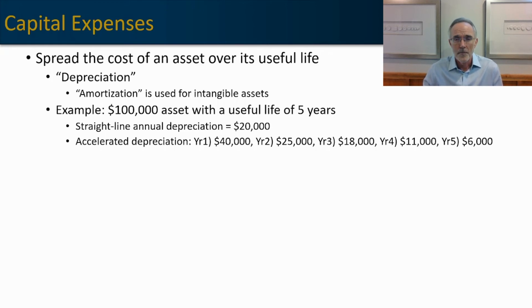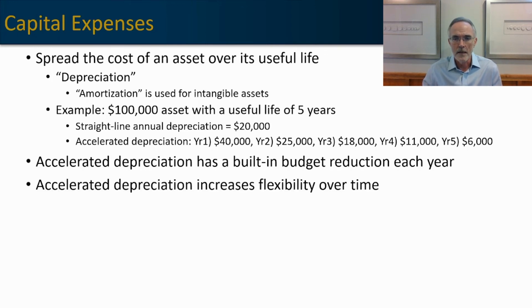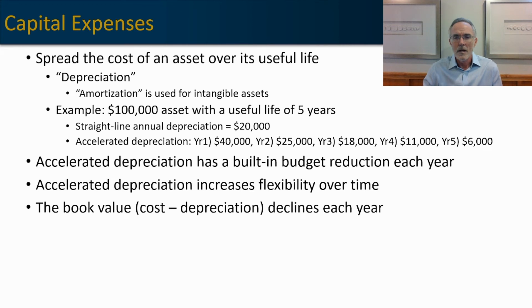Why would you want accelerated depreciation? When you first acquire the asset, you can adjust your budget by $40,000 rather than $20,000 under straight-line. That builds in automatic budget reductions in future years. It also creates more flexibility — if an asset runs out of usefulness before the planned term, the net book value will be much smaller under accelerated depreciation, making the write-off far less impactful to your budget.